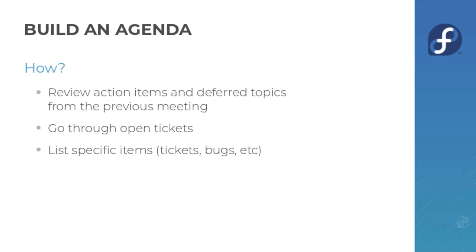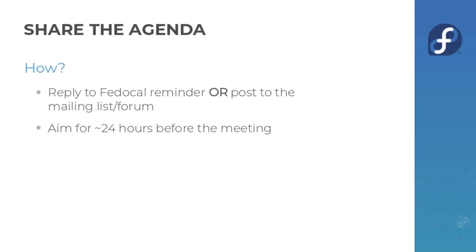When building the agenda, make sure you list things specifically. If you're going to talk about open tickets, list the open tickets. If you're talking about specific bugs, list the actual bugs. Don't make people try to search or guess, because again you want people to be able to prepare and to decide if they're going to attend. Then of course you need to share the agenda, because otherwise people won't be able to prepare or know if they want to attend.